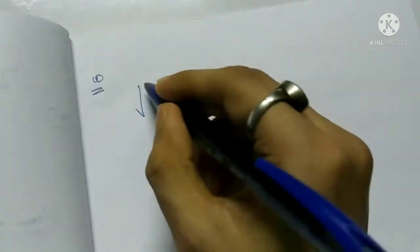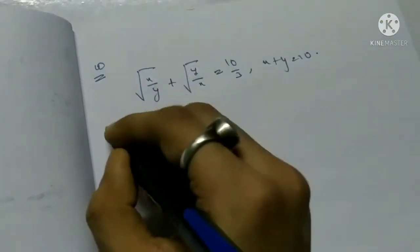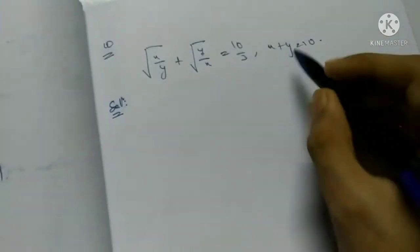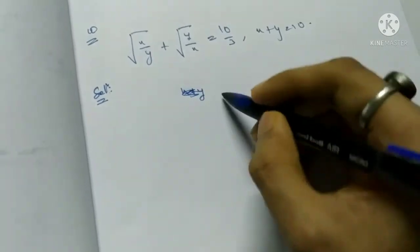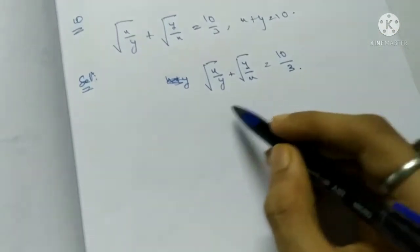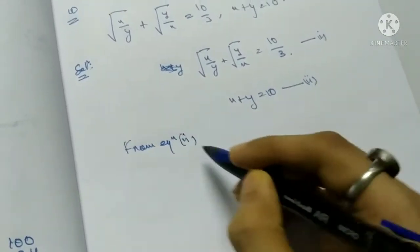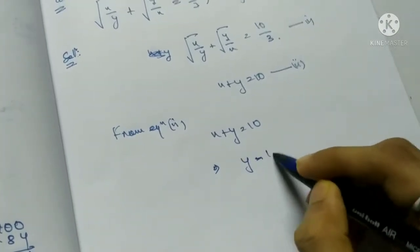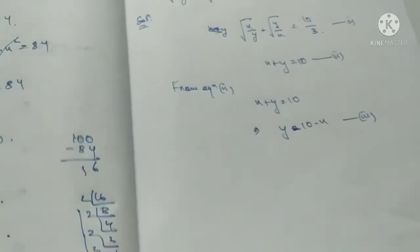Question number 10: √(x/y) plus √(y/x) equals 10/3 and x plus y equals 10. This is equation 1 and equation 2 respectively. From equation 2: y equals 10 minus x. This is equation 3.